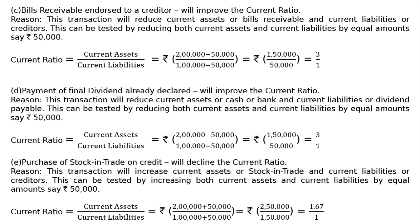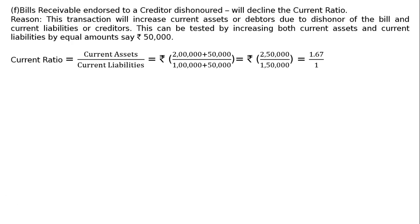Part F: Bills receivable endorsed to a creditor — dishonored. This will decline the current ratio. Reason: dishonor of the bill increases current assets (debtors reinstated) and current liabilities (creditors reinstated) equally. Tested by increasing both by Rs. 50,000: Current ratio = (Rs. 2 lakh + Rs. 50,000) / (Rs. 1 lakh + Rs. 50,000) = Rs. 2,50,000 / Rs. 1,50,000 = 1.67:1. Since 2:1 is higher and 1.67:1 is lower, the current ratio will decline.